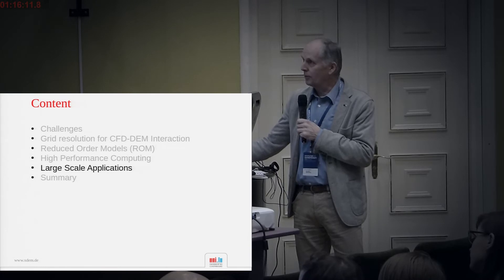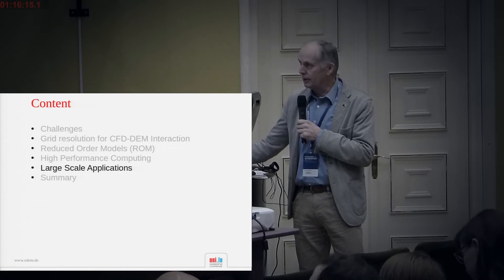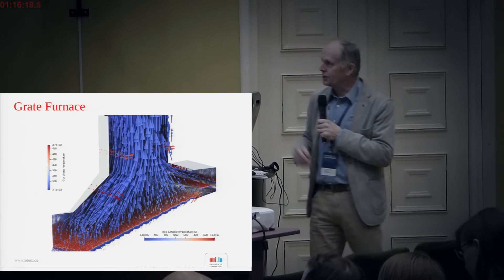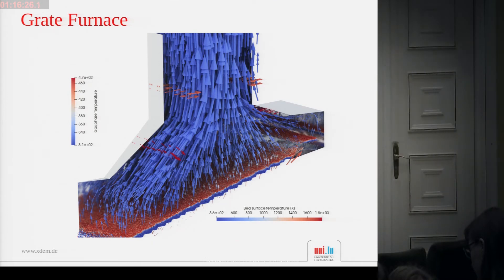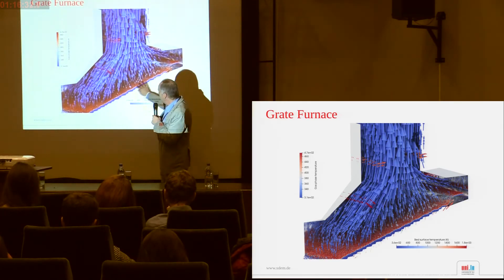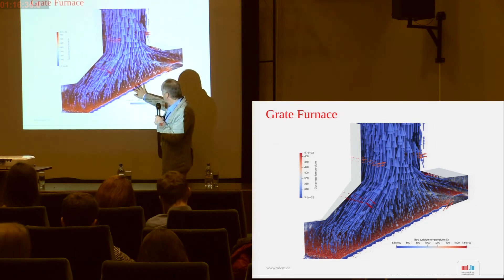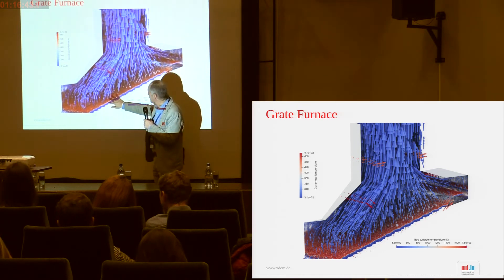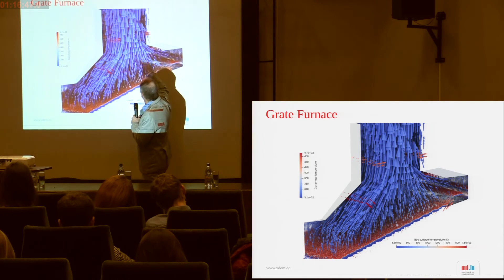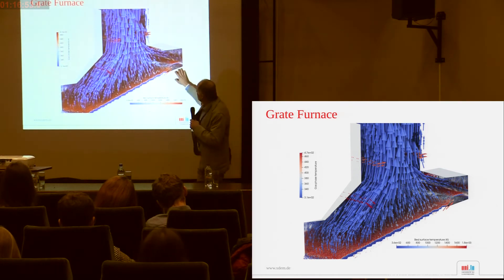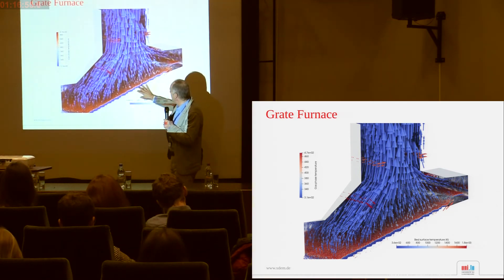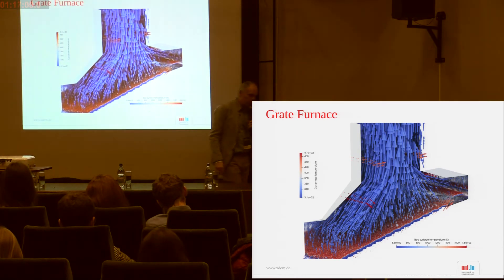Now coming to some large-scale applications — first the grate furnace, a biomass combustion application in collaboration with the University of Pisa. Biomass comes in and is transported over the forward-acting grate, with primary air inflow for combustion. We have drying, pyrolysis, and combustion processes, followed by secondary air injection and flue gas recirculation. What we predict here is the particle motion along the grate, the flow, and the heat, mass, and momentum transfer between particles and flow.